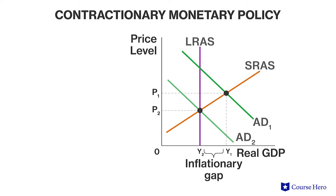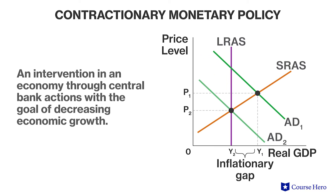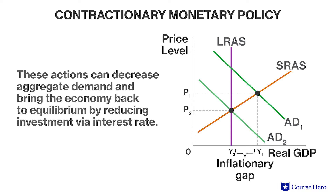In the event of an inflationary gap, intervention in the economy, called a contractionary monetary policy, may be implemented through central bank actions with the goal of decreasing economic growth. These actions can be used to decrease aggregate demand and bring the economy back to full employment equilibrium by reducing investment via interest rates.